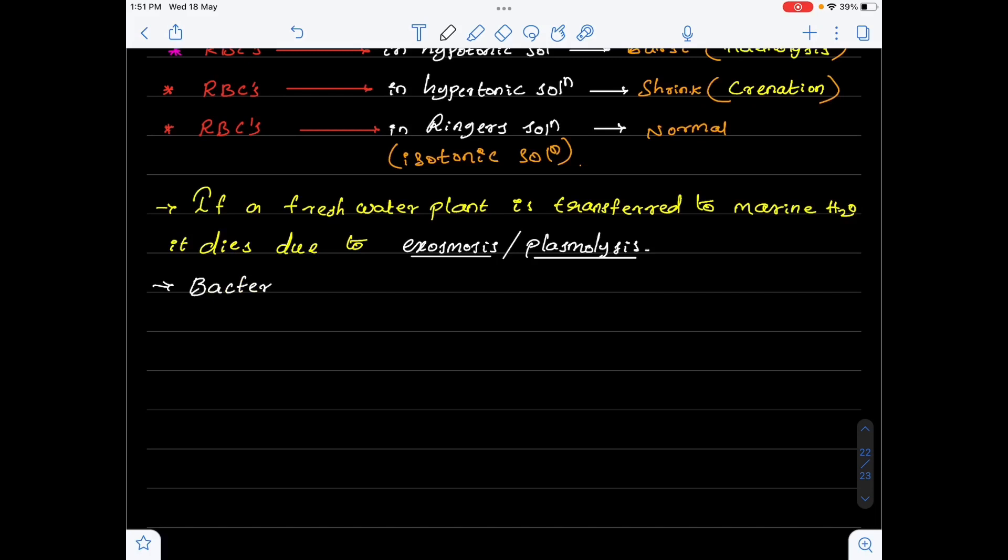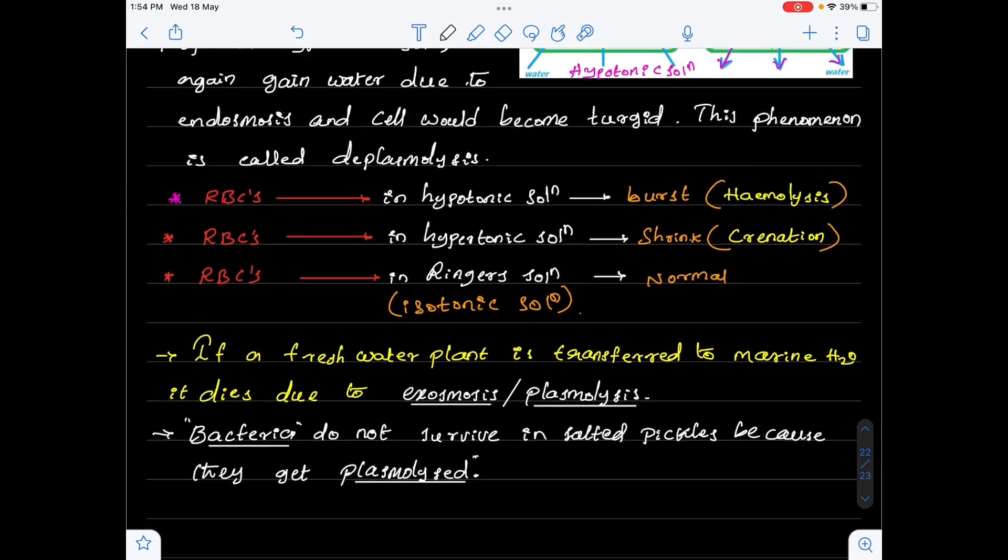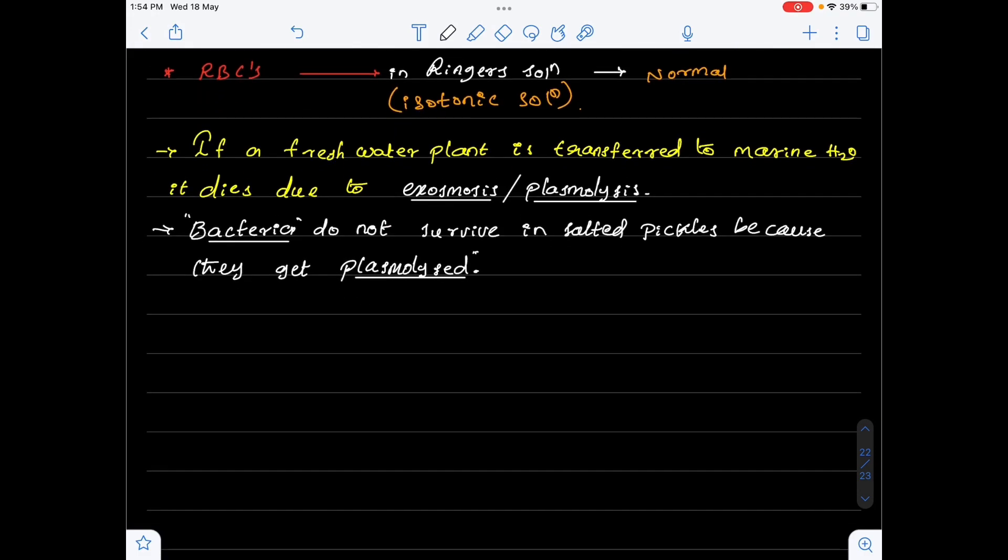And let us take one more example. Bacteria do not survive in salted pickles because they get plasmolyzed. How come it is possible they are animal cells, but you are talking about plasmolysis of bacteria in the salted pickles? Yes, it is plasmolysis only. In bacteria, cell wall is present. So, when it is in the salted pickles, the exosmosis takes place. So, this results in the bacteria dying. This is about plasmolysis, deplasmolysis and plasmolysis examples.